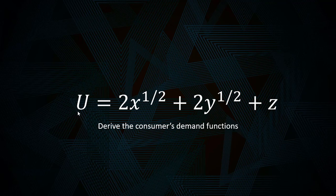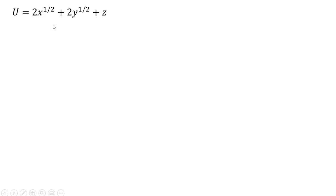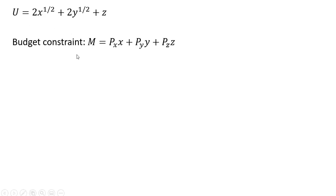Hello. In this video, we're going to take a consumer's utility function — a function of three goods — and derive the consumer's demand functions. Here is the consumer's utility function once again, along with the budget constraint for these three goods: good x, good y, and good z.